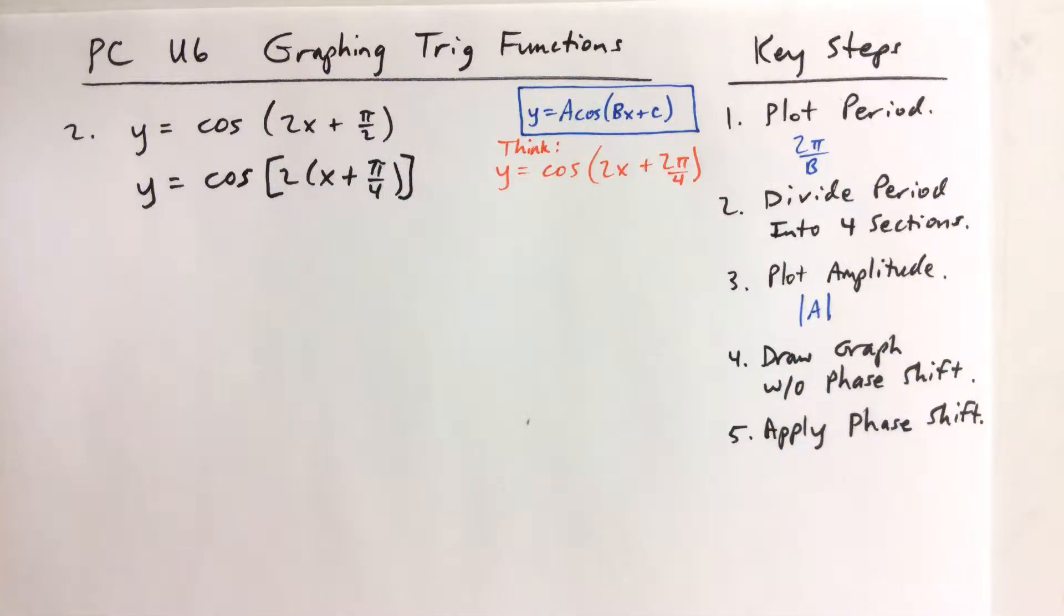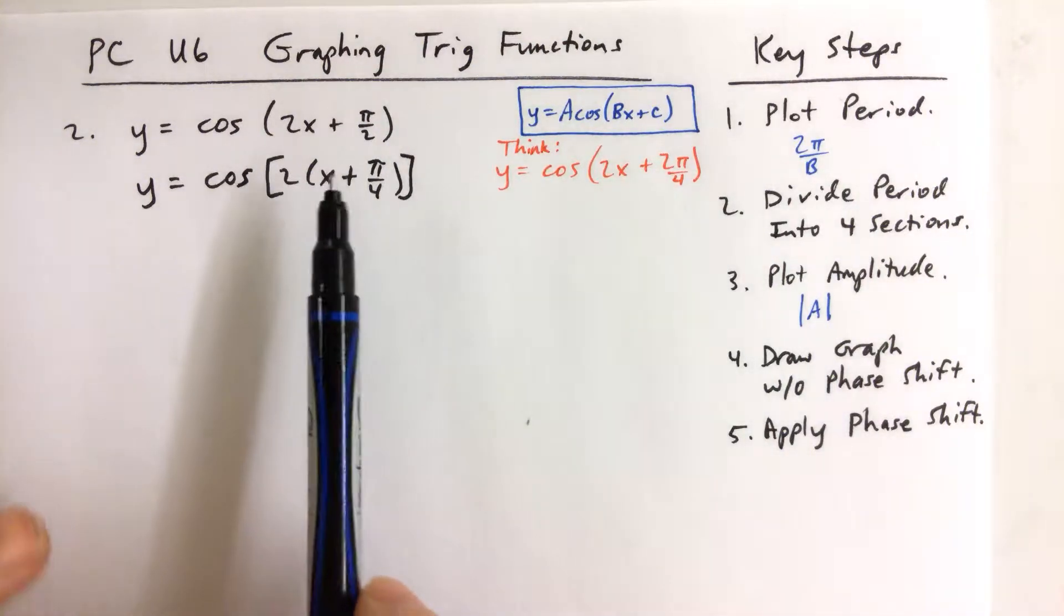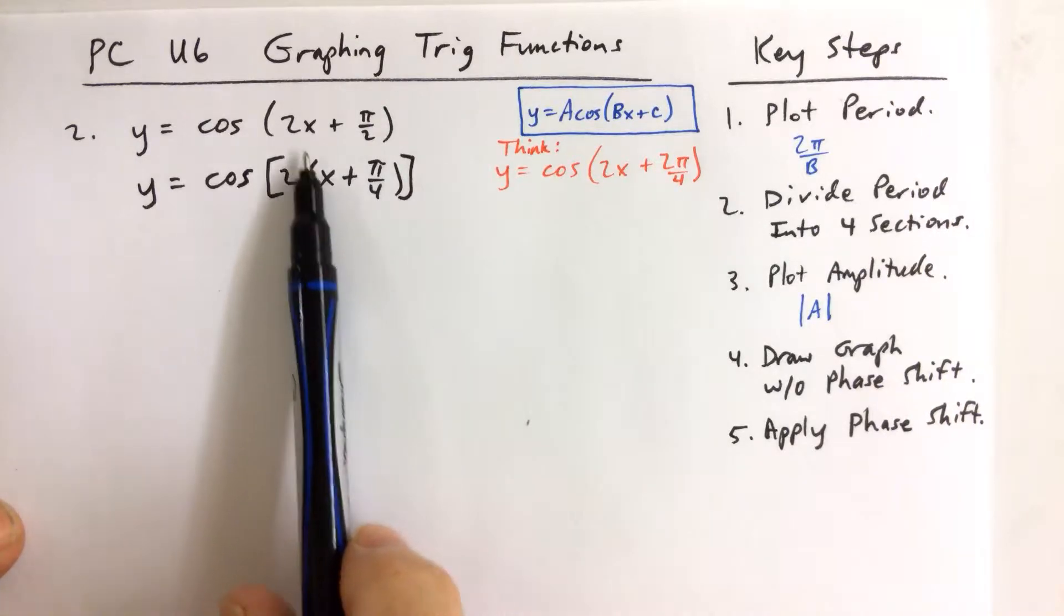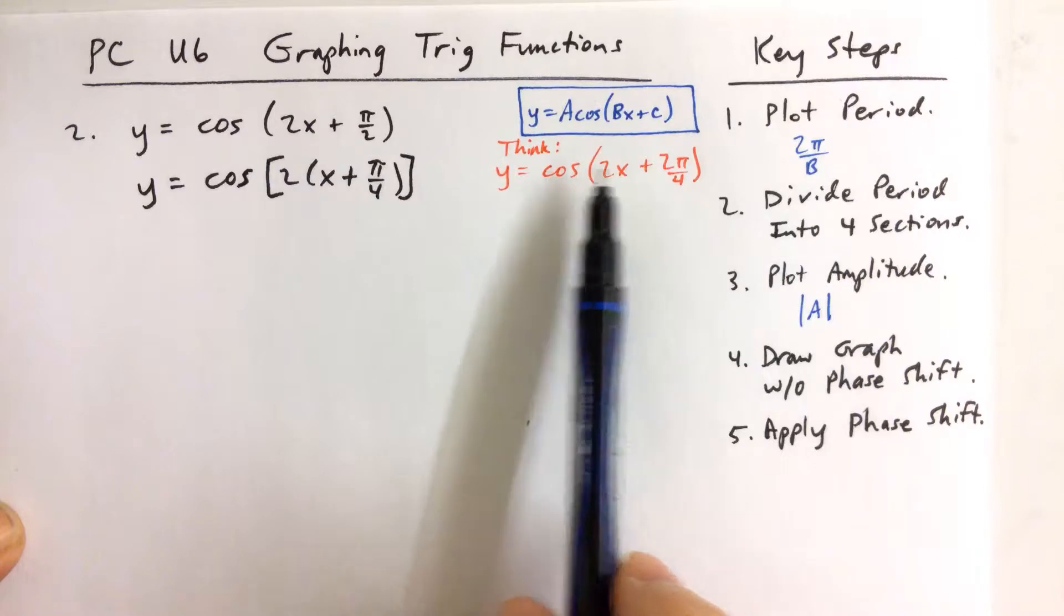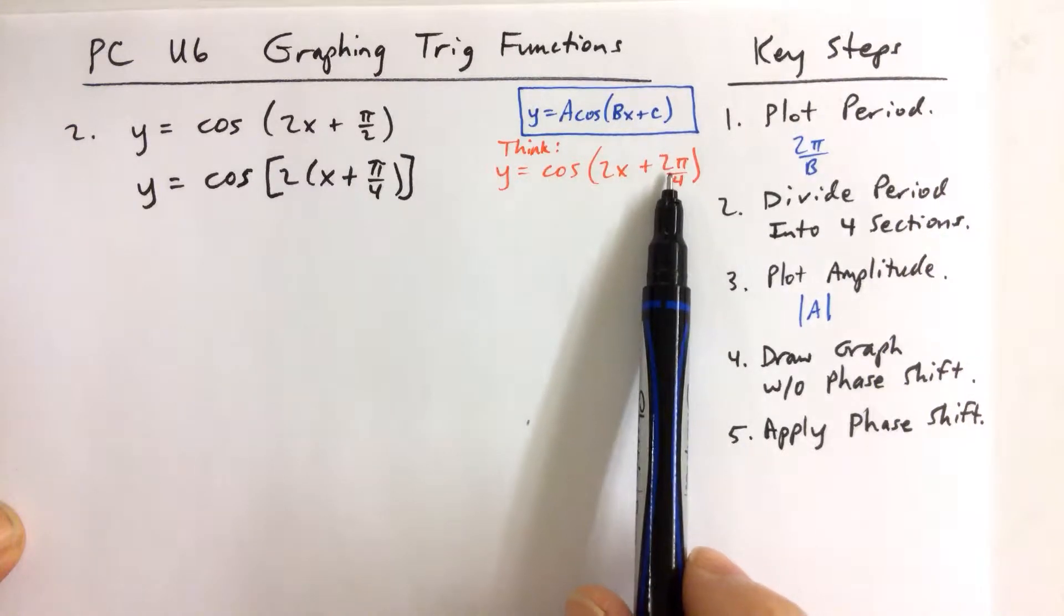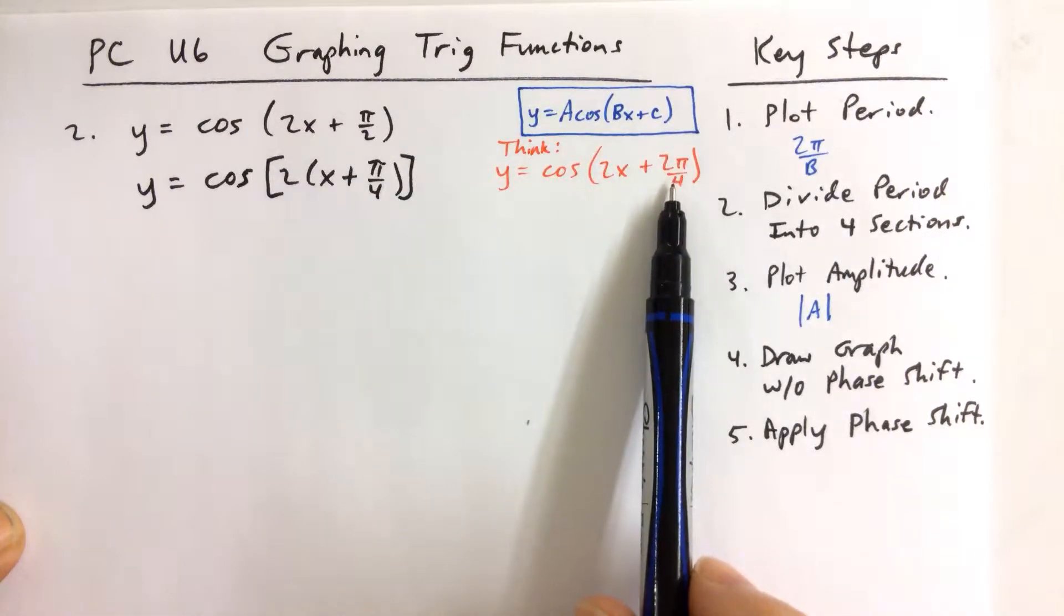Problem number two. The first thing I want to do is factor out a 2 from the 2x plus pi over 2. If you think cosine of 2x plus pi over 2 can be written as 2x plus 2 pi over 4.